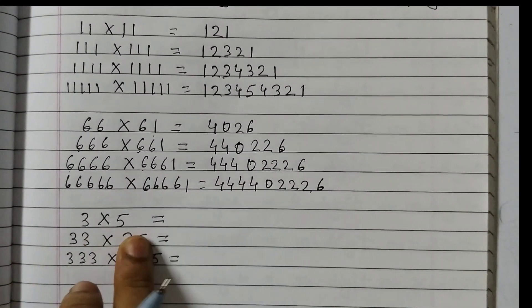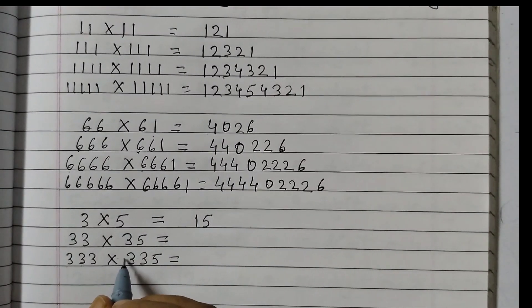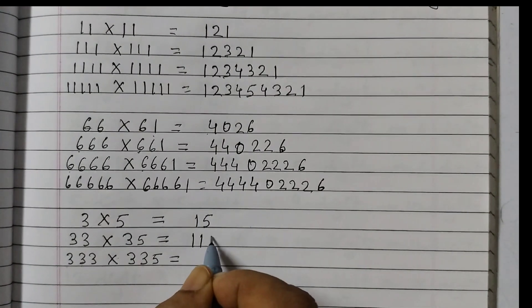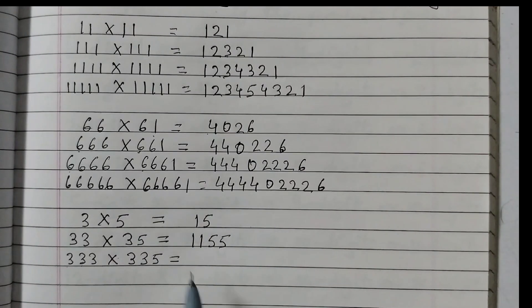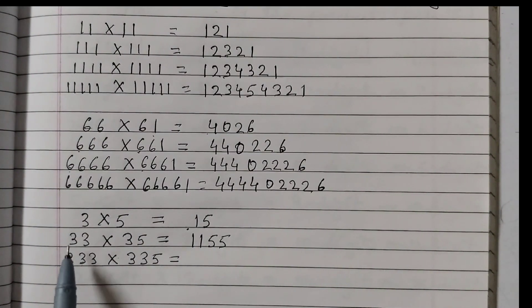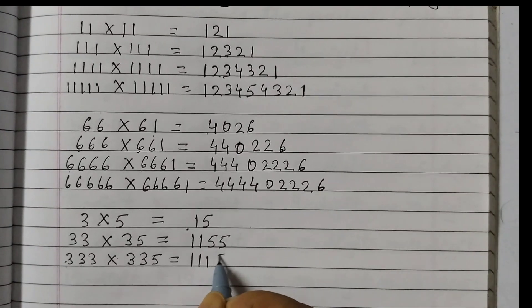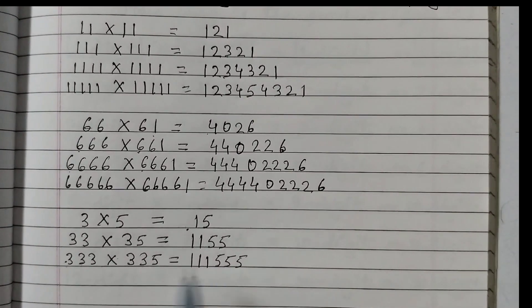Third one, 3 into 5 is 15. 33 into 35 is 1155. So the pattern is we are going on adding 1 this side and 5 the other side. So now here adding 33. So it will be 111, 555.